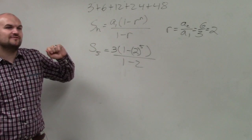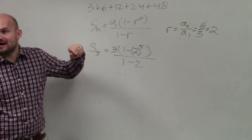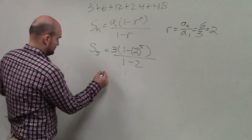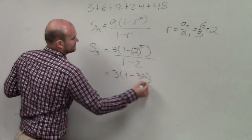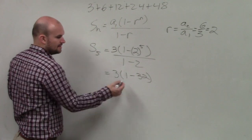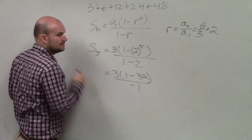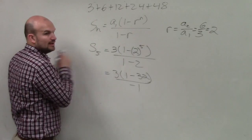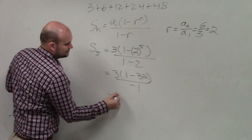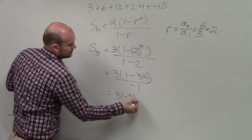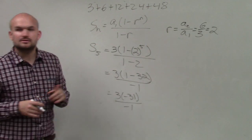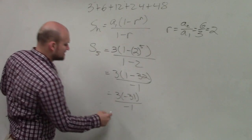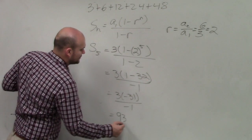So 2 raised to the fifth power is 2 multiplied by itself 5 times, which is 32 divided by negative 1. 1 minus 32 is going to be a negative 31. So therefore, my final answer becomes a positive 93.